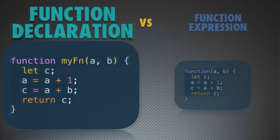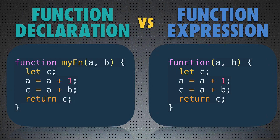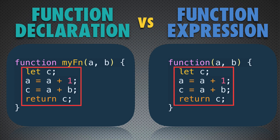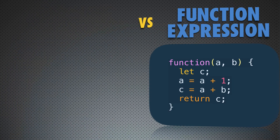Let's now look at this example. On the left side you see a function declaration, and on the right side you see a function expression. The only difference between those two is that in the function expression on the right, you don't see a name for the function. Everything else is the same — in both you see the function keyword, optional parameters, and function body.